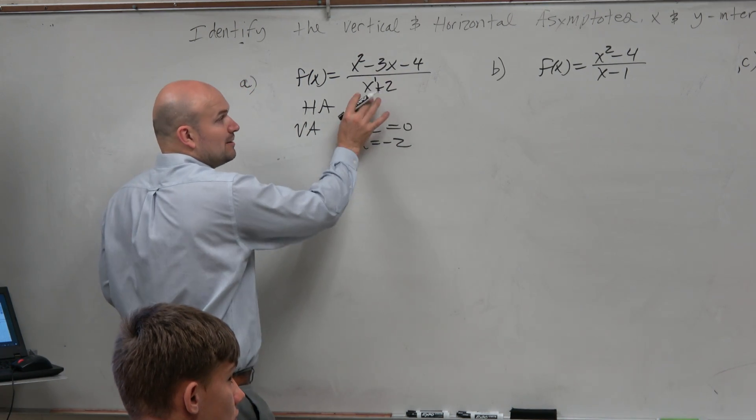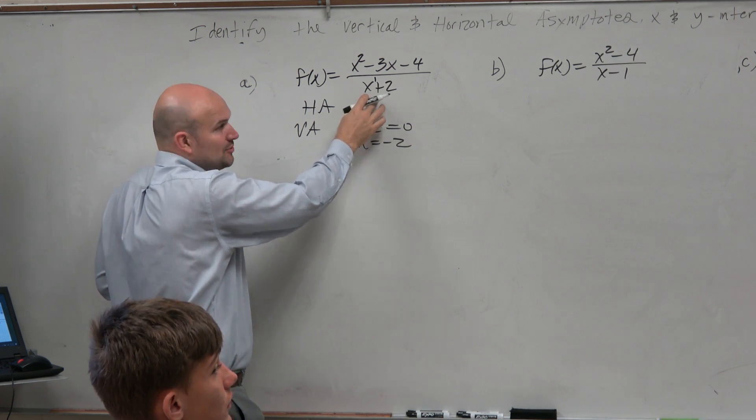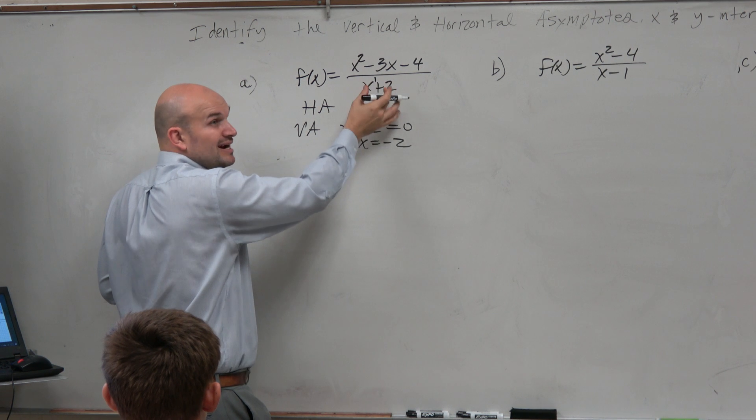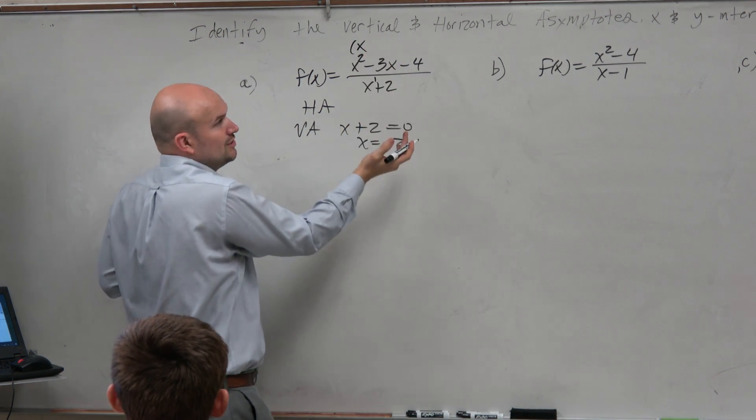And now I want to make sure, because could this be a hole? Which is a slant asymptote. Could this be a hole? It's possible. So let's factor this to make sure it's not. Because obviously, if you have a hole, you don't have an asymptote.